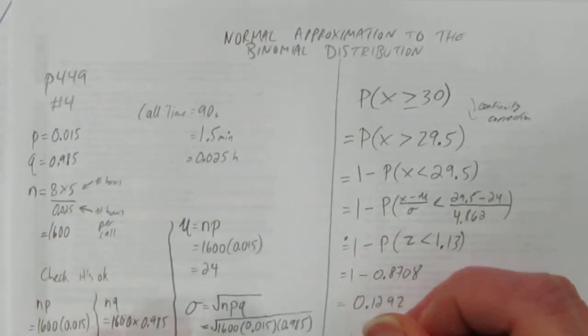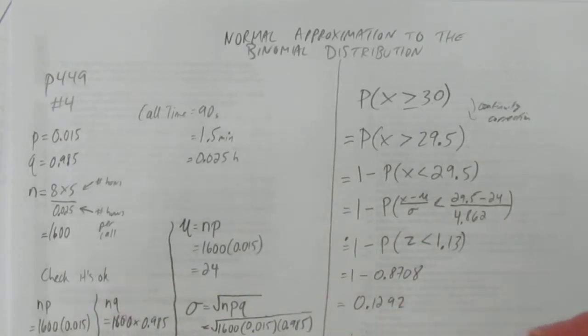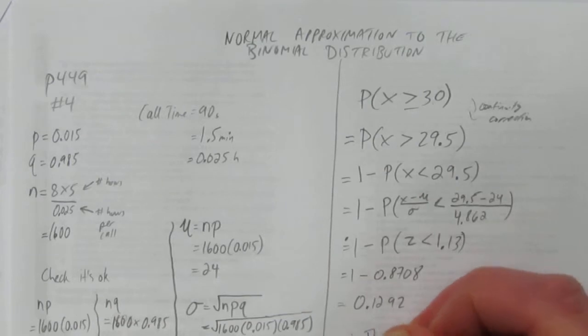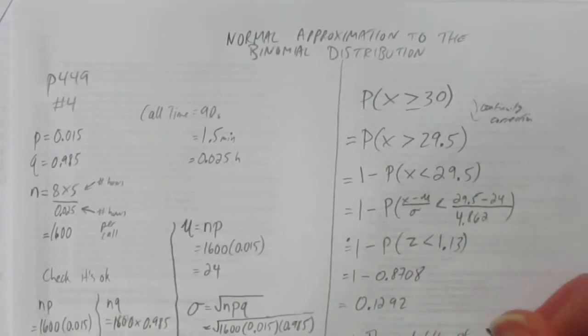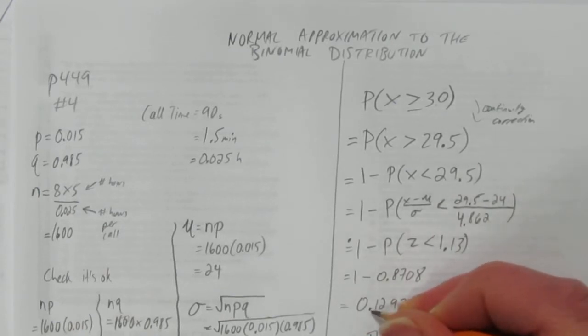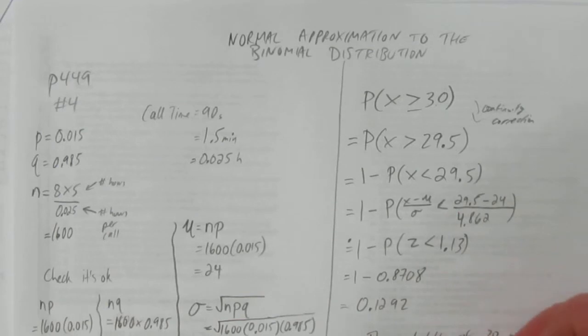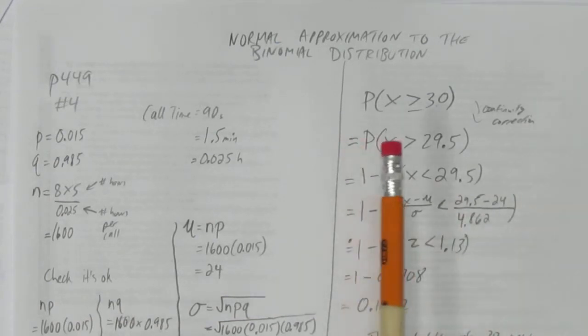And we've got it. Therefore, the question asks, what is the probability Tony gets at least 30 new customers for the week? The probability of 30 new customers is approximately, make this a percent by moving the decimal over two spots, 12.92%. So this video was an example of how to use the normal approximation on a binomial distribution.